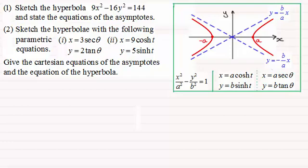Well in it we discussed the equation of a hyperbola. The Cartesian form was given by this and we had two parametric forms, the hyperbolic form and the trigonometric form. The equations of the two asymptotes were given as y = (b/a)x and y = -(b/a)x.